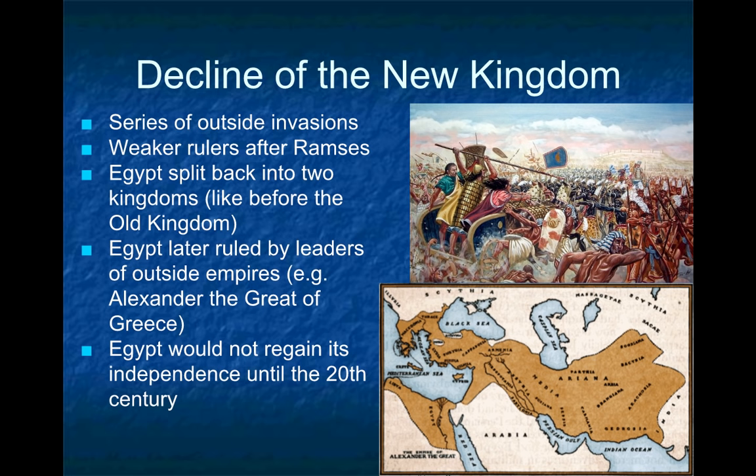The most famous of these outside rulers was Alexander the Great, who drove the Persians out of Egypt in 332 BCE. We'll talk more about the culture and society of ancient Egypt in a future video.